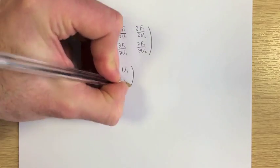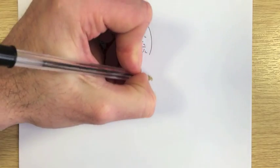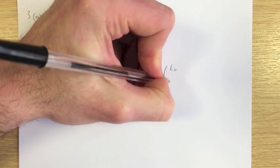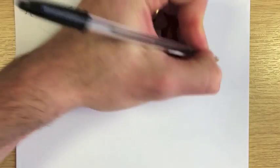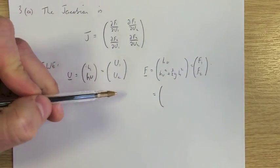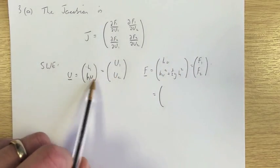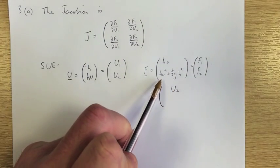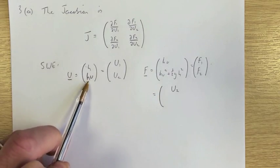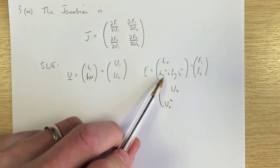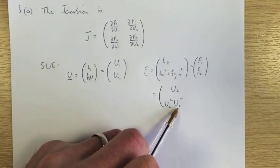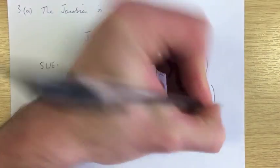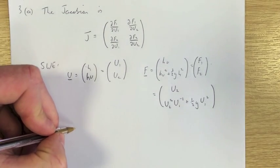So U1 is H, U2 is HU. The flux vector F is HU and HU squared plus one-half GH squared — this is straight from the question. So F1 is HU, which equals U2. F2 is HU squared, which I write as U2 squared divided by U1 (i.e. U1 to the power minus one), plus one-half G times U1 squared.